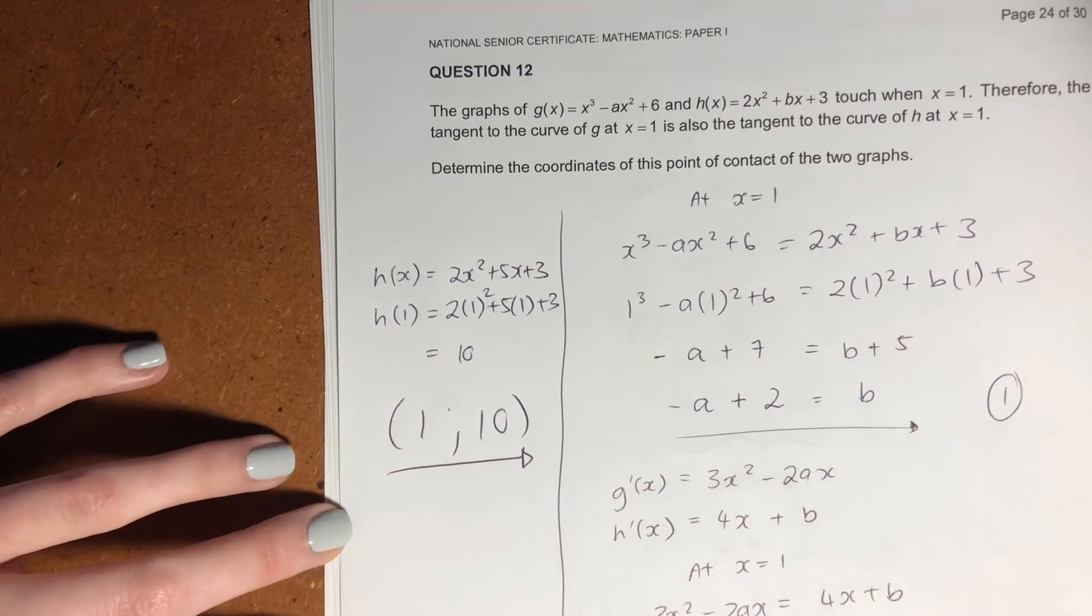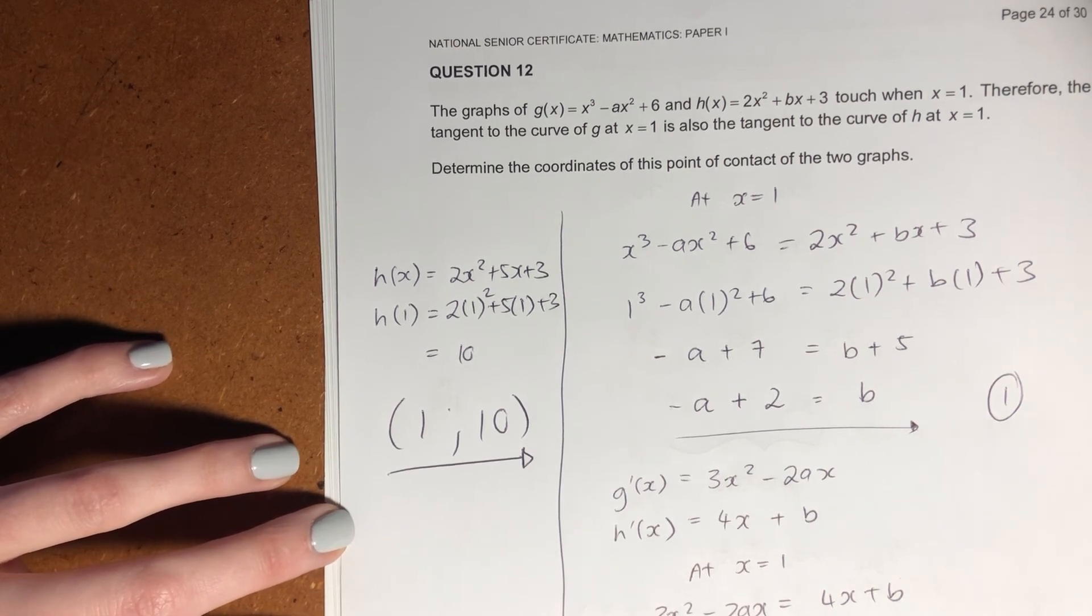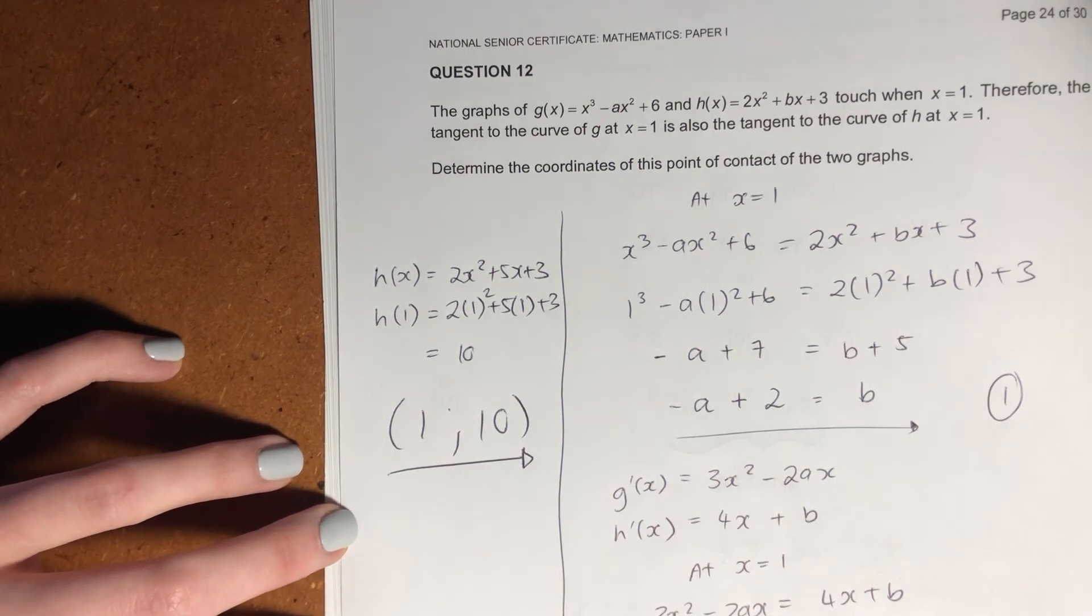And we are done. Right. So it's very important that you think this through very methodically. Right. Yes, it seems very daunting, but I literally said, what have they given me? What are they telling me? Keep saying that to yourself. Go back to your basics. Right. We have one question left. Let's finish. God bless you.